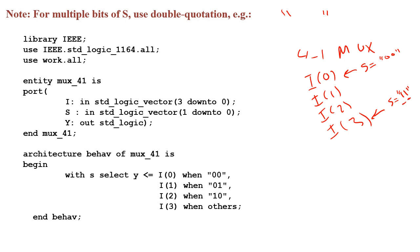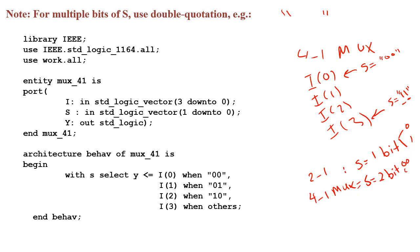For a 2-to-1 mux, s must be one bit because s can be either 0 or 1. For a 4-to-1 mux, s must have two bits because options are numbered 00, 01, 10, and 11. For an 8-to-1 mux, we need three bits for s, since options go from 000 to 111 — that's zero to seven, giving a total of eight options.